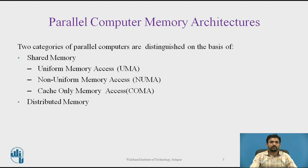In the shared memory, we are looking at uniform memory access, non-uniform memory access, and cache only memory access. The second category we are looking at is distributed memory. First, we are going to check what exactly the shared memory is and the parts of the shared memory.